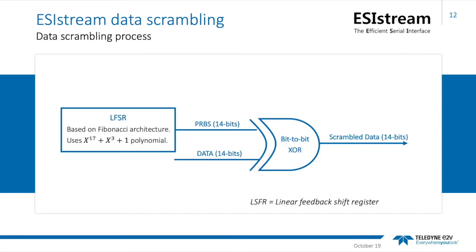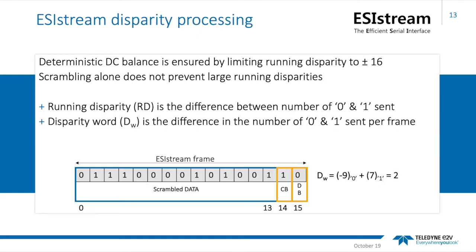There are three key aspects to the scrambling process. First, it statistically ensures there are a known number of level transitions within the signal to ensure the link remains locked at the receive end. This locking requires that the clock signal be recovered from the receive end data stream. It's important that there is no DC creep or offset that builds up in the link, as that potentially raises the probability of a bit error occurring. And perhaps most helpful beyond that, scrambling can be designed to minimize the spectral signature of multiple links to help keep sensitive conversion systems electrically quiet and thus reduce interference.